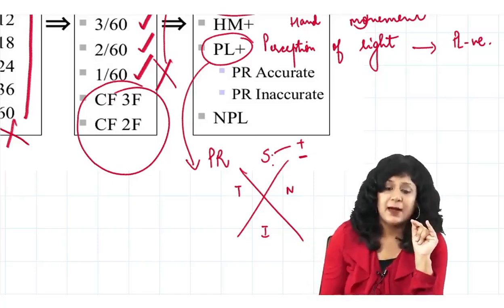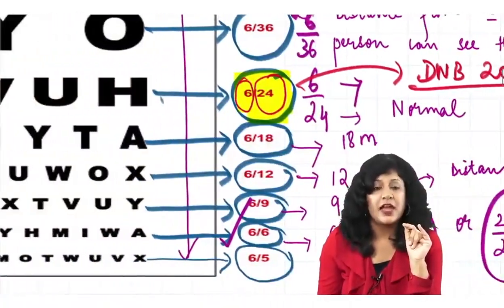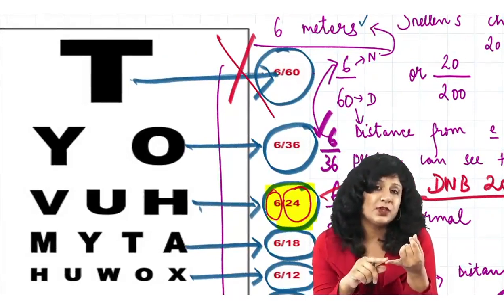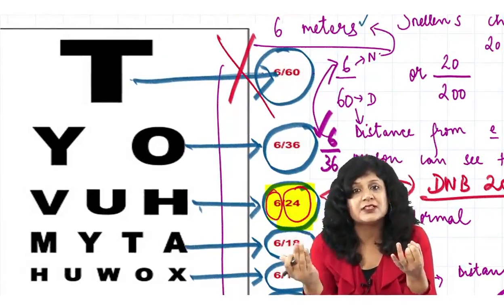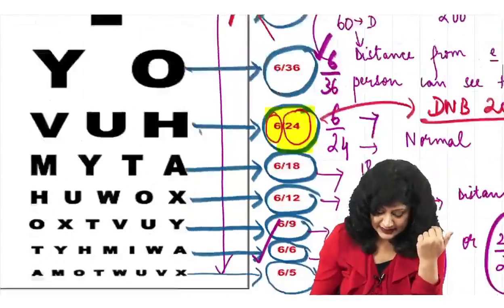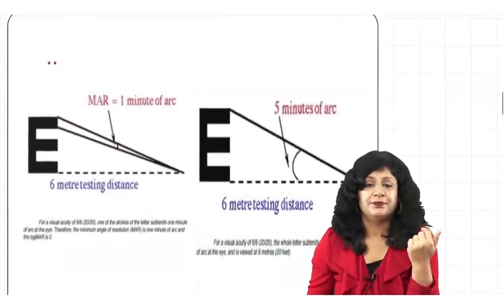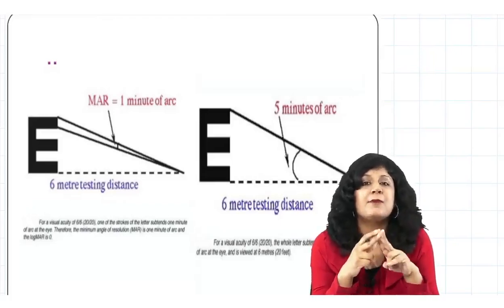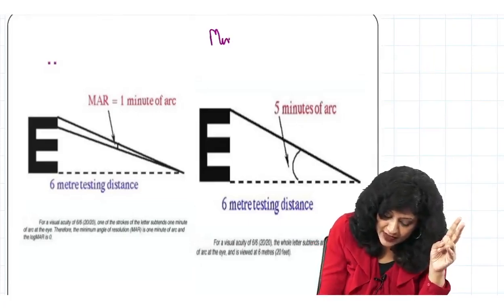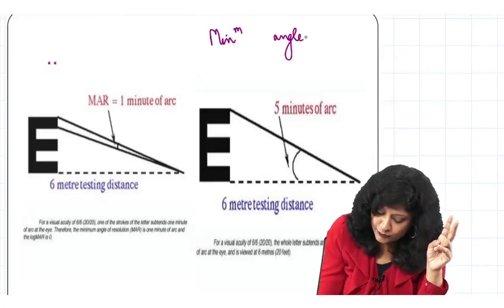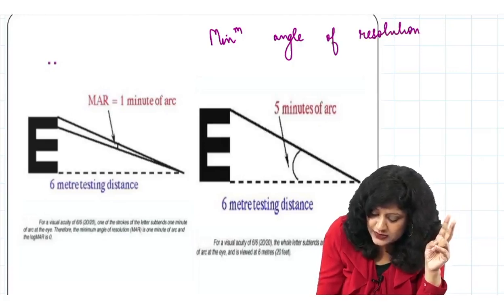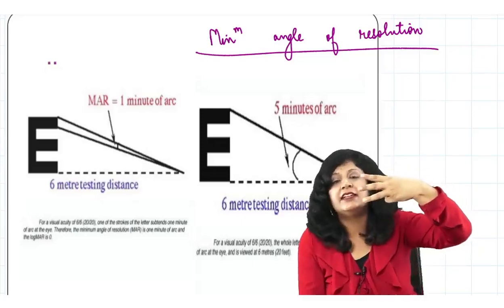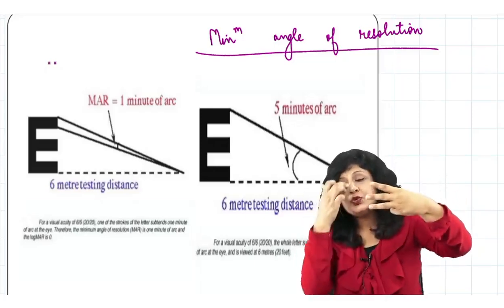Now returning to the Snellen's chart: how do we know the topmost letter is read by a normal person from 60 meters and the next from 36 meters? There are two related concepts: one minute of arc and five minutes of arc. For this we need to understand the minimum angle of resolution. Take the letter E — to see it, you must resolve three limbs separately.